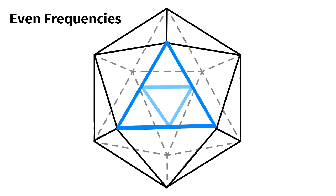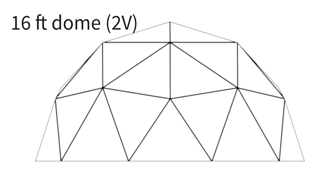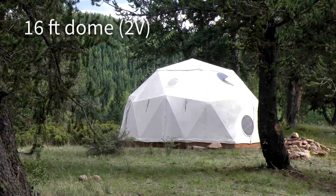For even frequency domes—2, 4, 6, etc.—we can utilize the natural equator to form a perfect hemisphere. Our 16 foot dome is a two frequency hemisphere. The 16 tall is a two frequency hemisphere with an added row for height.